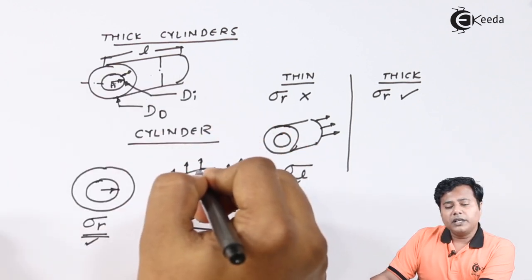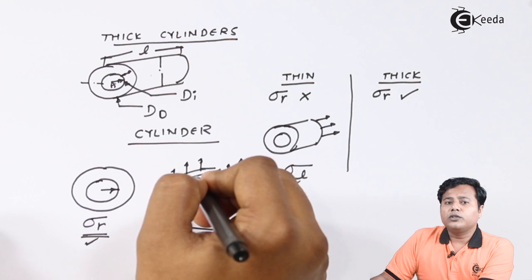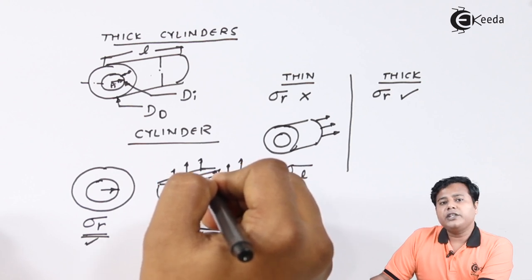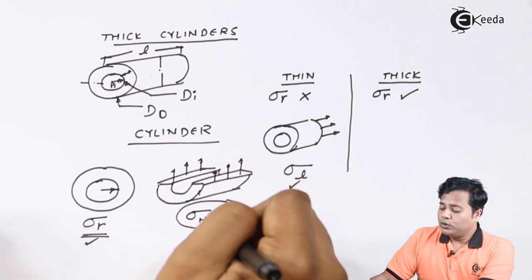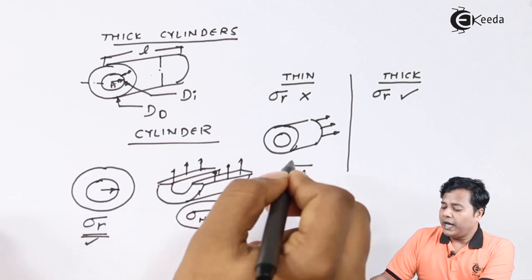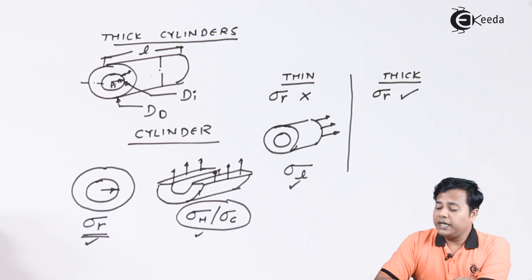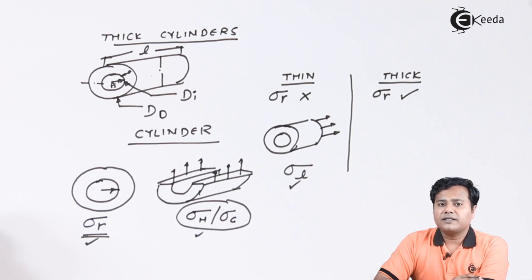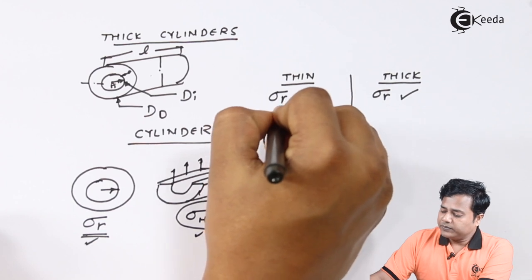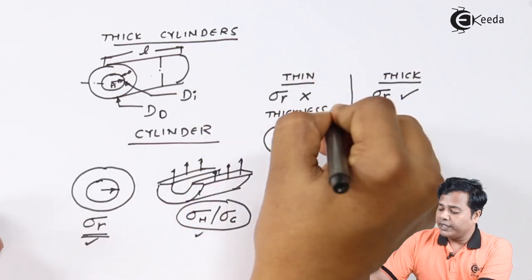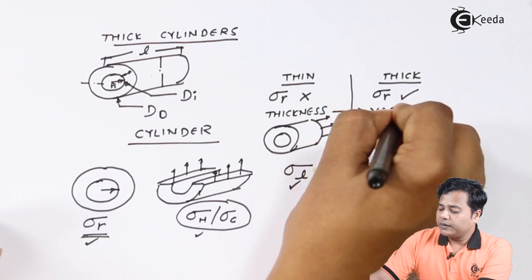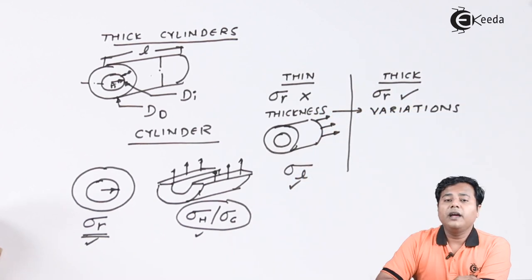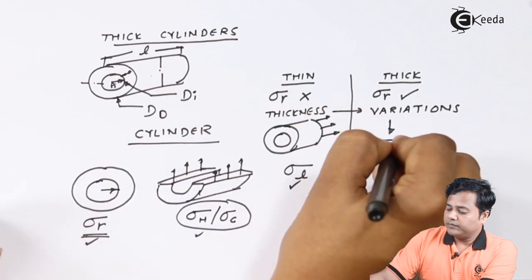The second important difference is regarding variation of stresses. In thin cylinders, hoop stresses and longitudinal stresses were considered constant — there was no variation across the thickness. But in thick cylinders, each and every kind of stress varies along the thickness. So thickness is a very important parameter, and it is directly associated with variations in stresses.